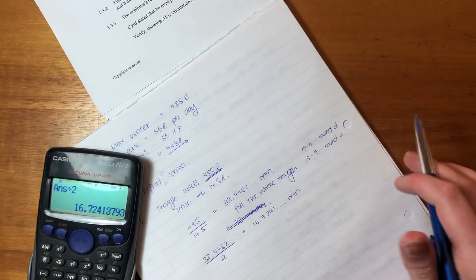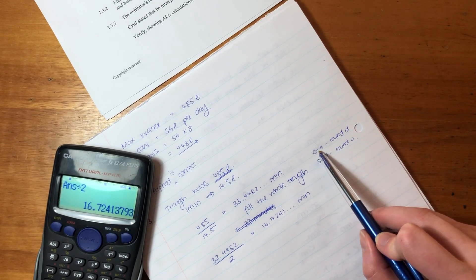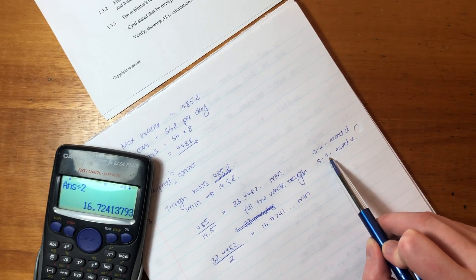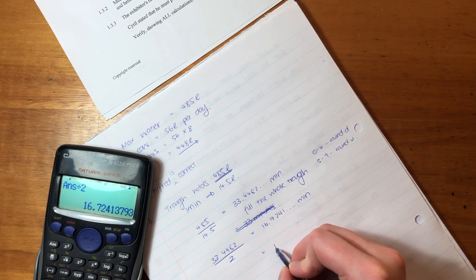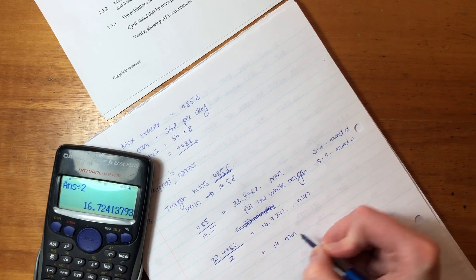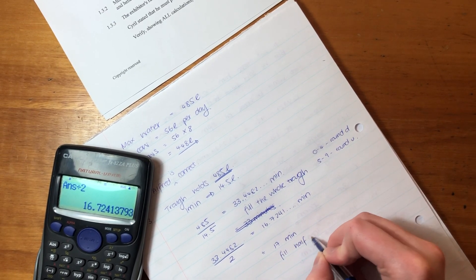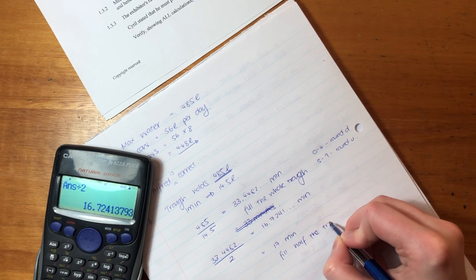Now, based on this rule over here, if it's between 0 and 4 we round down, and between 5 and 9 we round up. So it is 17 minutes to fill half the trough.